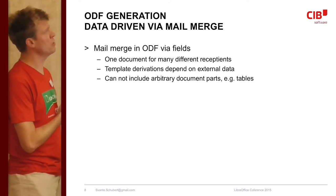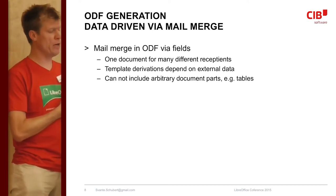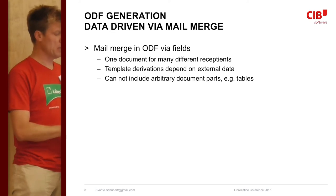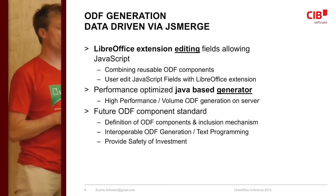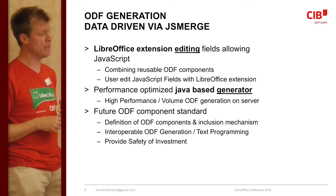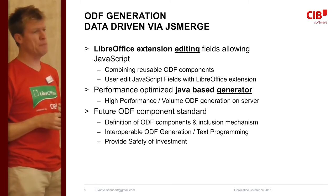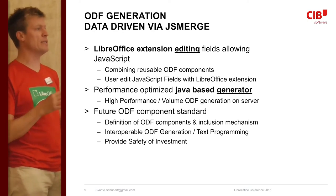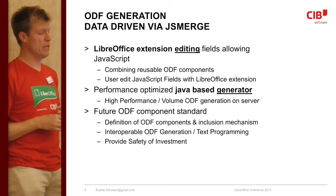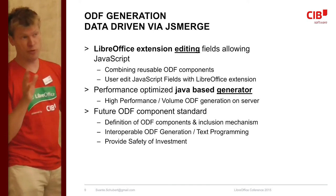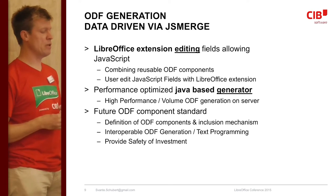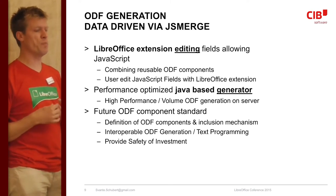Companies like CRD working with insurance companies and banks require even more — like a billion documents. For this reason they created something called JSMerge. JSMerge gives you the ability not only to include or omit text and paragraphs, but also arbitrary content — even components of parts that are inserted. The reason I wanted to show this is that there might be an idea to extend the ODF standard to have a much more component-based approach to document creation.